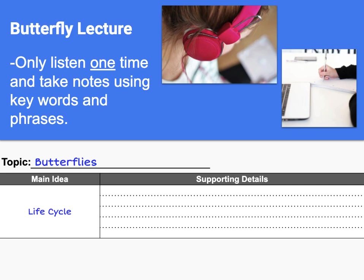The life cycle of a butterfly is short but interesting. A mother butterfly lays her eggs on plants. She chooses plants that her babies can eat for food. Butterfly eggs only take a few days or weeks to hatch. Baby caterpillars are tiny when they are first born. Caterpillars do nothing but eat and grow.